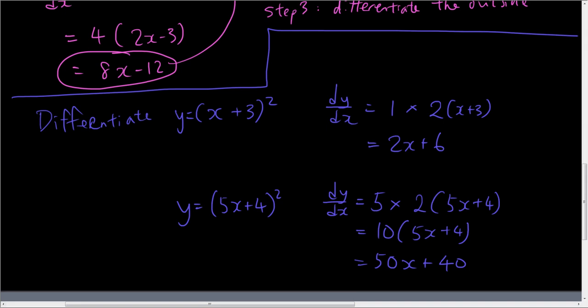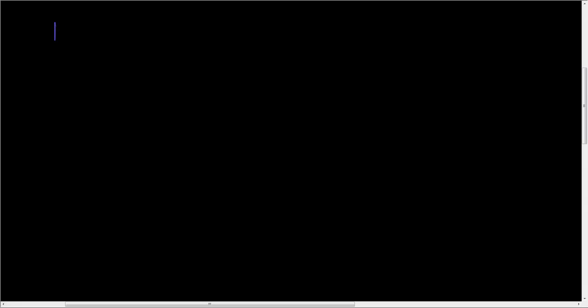Okay. Now what happens if the power is not squared. Right. That is where the chain rule becomes useful. Right. Because if you wanted to differentiate. Use a brighter color. If you wanted to differentiate.